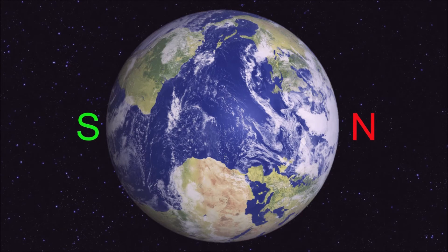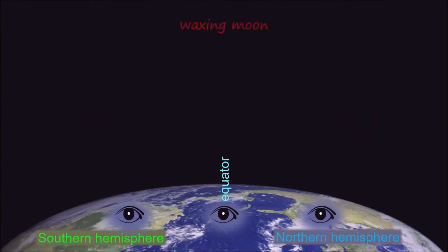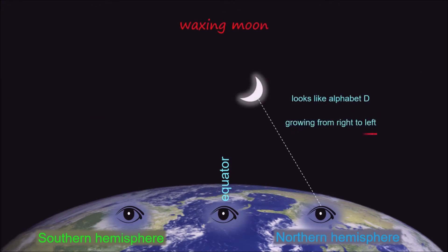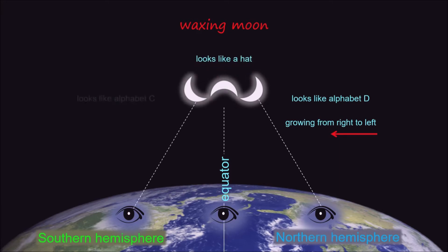Now you can turn it over like this so the North Pole is on your right hand side. As we all know, the crescent moon can be waxing or waning. For waxing moon, which means growing moon, it looks like a hat to an observer at the equator. At any vantage point on the Northern Hemisphere, it looks like the alphabet E to the observer, and it will be growing from right to left. At any vantage point on the Southern Hemisphere, it looks like the alphabet C to the observer, and it will be growing from left to right.